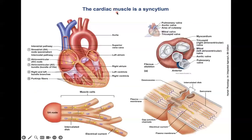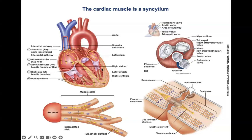For the heart to be excited very quickly and effectively, it has to be a syncytium. Once an impulse is generated, it has to reach a very large number of cells. We have gap junctions between the cells, so they pass the signal from one cell to the other very quickly.